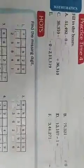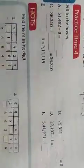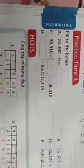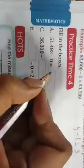Now, practice time 4. Fill in the blanks questions are given. I will solve for you. First, 51,492 minus 0. When we take away 0, we are not taking away anything, so our answer is that number itself.